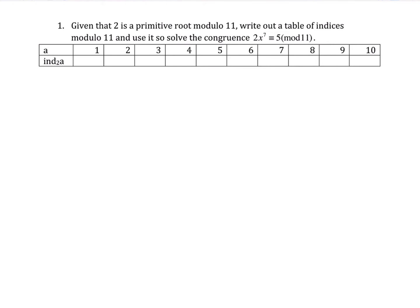Index arithmetic example 1. In this example we're given 2 as a primitive root mod 11 and asked to fill in the table of indices mod 11 and then use it to solve the congruence given there. So the first thing we need to do is calculate the powers of 2 mod 11.